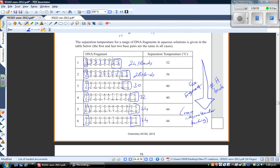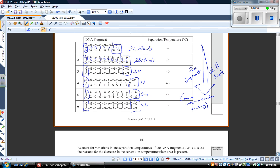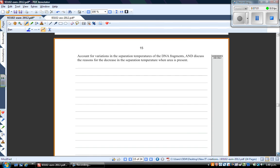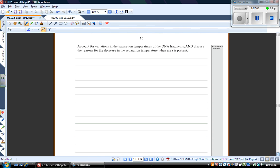We go back to the exam paper and see what else they ask. So we scroll on down. The next part of the question is, account for variations in the separation temperatures of the DNA fragments and discuss the reasons for the decrease in separation temperature when urea is present. So we've kind of mentioned this already. Okay, so I want to avoid writing blocks of text for some of these paragraph answers as they're already pretty well written from the NCEA guys. So I'll just put some key ideas down here.